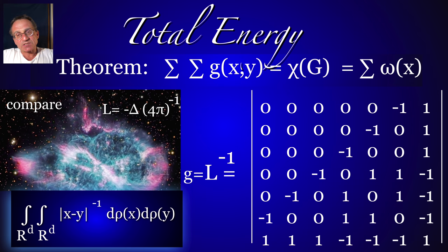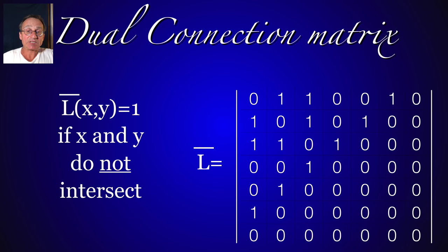If you think of the energies G(X,Y) as potential energies between the two simplices, the motivation is to look at the total energy. This comes from physics. Remarkably, this is the Euler characteristic of the complex.